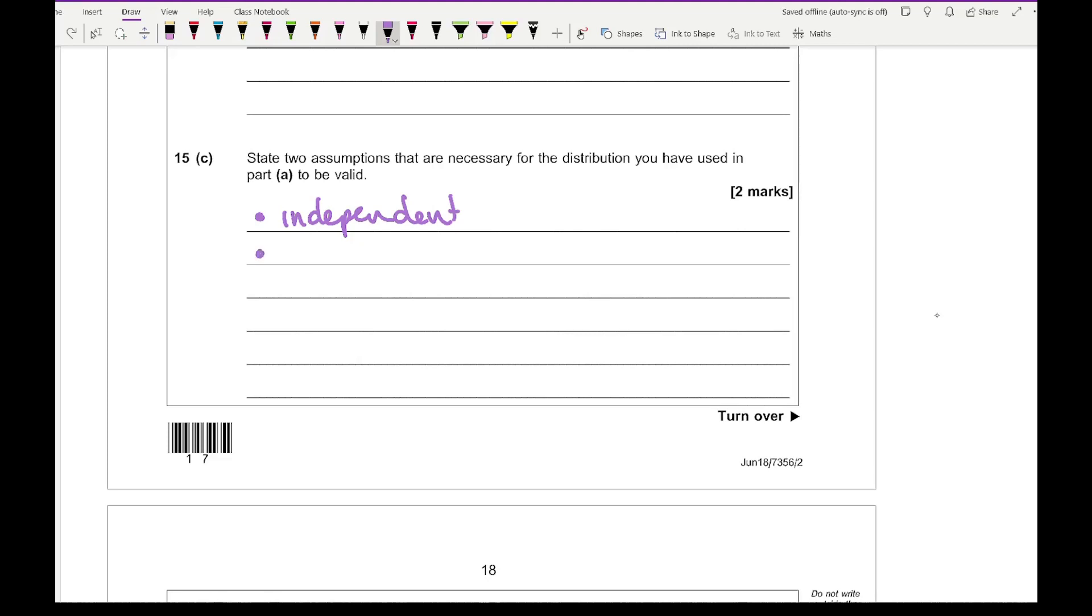You could also state something along the lines of the probability of hitting a bullseye remains the same. And you could say something like there are only two outcomes, either a hit or a miss. You definitely would need to state two different property assumptions rather than just going into detail about one.